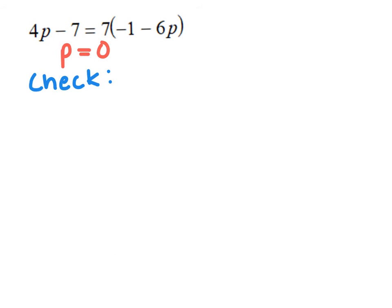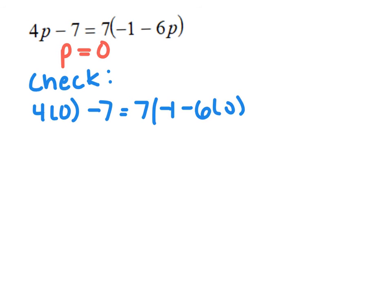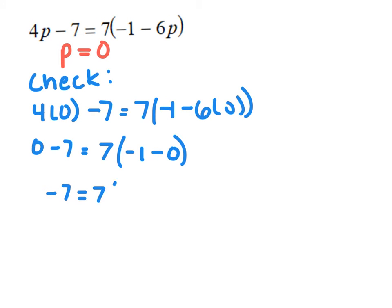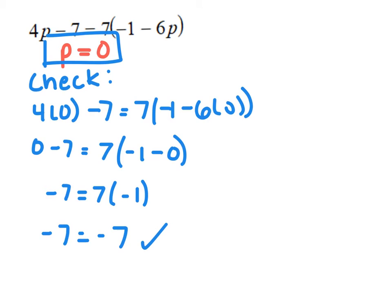We found that p equals 0, so now we need to check our answer by substituting 0 in for p: 4 times 0 minus 7 equals 7 times negative 1 minus 6 times 0. Simplifying: 0 minus 7 on the left gives negative 7; on the right, 7 times negative 1 minus 0 gives negative 7. Since negative 7 equals negative 7, the answer is p equals 0.